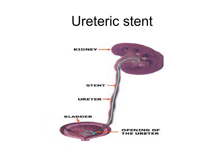A ureteric stent is a thin tube placed in the ureter to drain urine from the kidney. One end of the tube is inside the kidney and the other end is in the urinary bladder. This is mainly used in cases of ureteric obstruction.